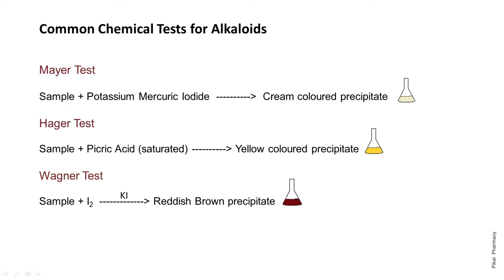The first common test is Mayer's test. In Mayer's test, the reagent is potassium mercury iodide, also known as Valser's reagent. When the sample reacts with potassium mercury iodide, it gives a cream-colored precipitate. This cream-colored precipitate indicates a positive result, meaning the sample contains alkaloid.